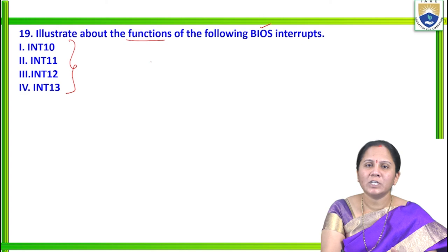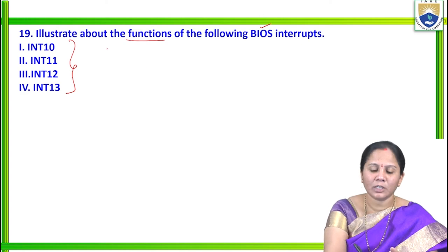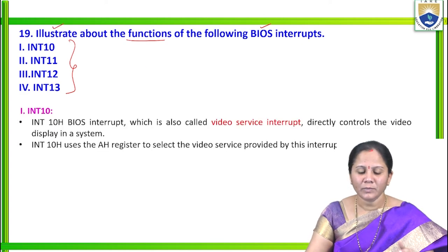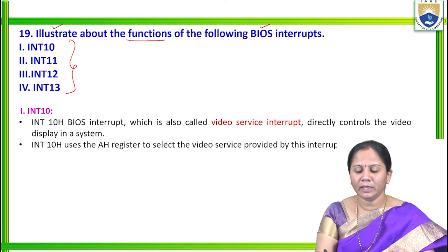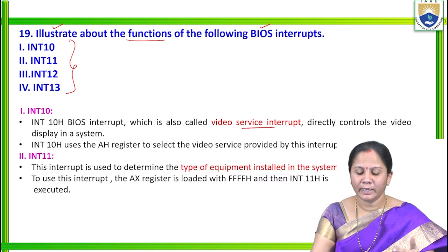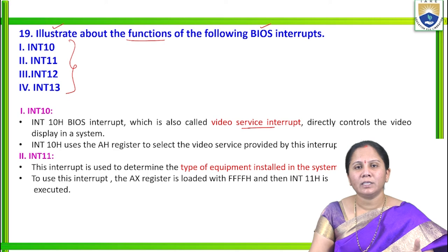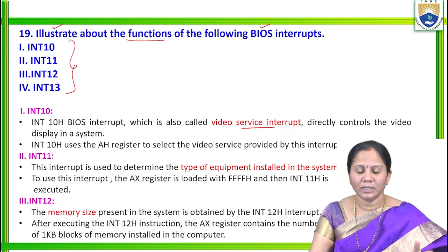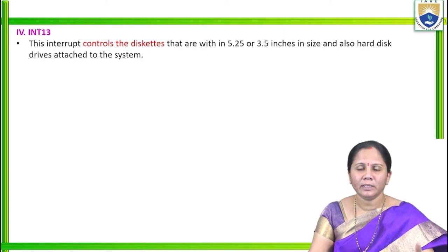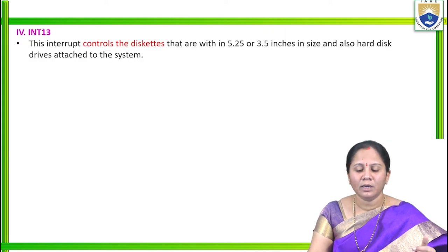BIOS interrupts: INT10H = video service interrupt; INT11H = type of equipment installed; INT12H = memory size; INT13H = disk control; INT14H = serial communication ports control; INT15H = control various IO devices; INT16H = keyboard control; INT17H = access parallel printer.